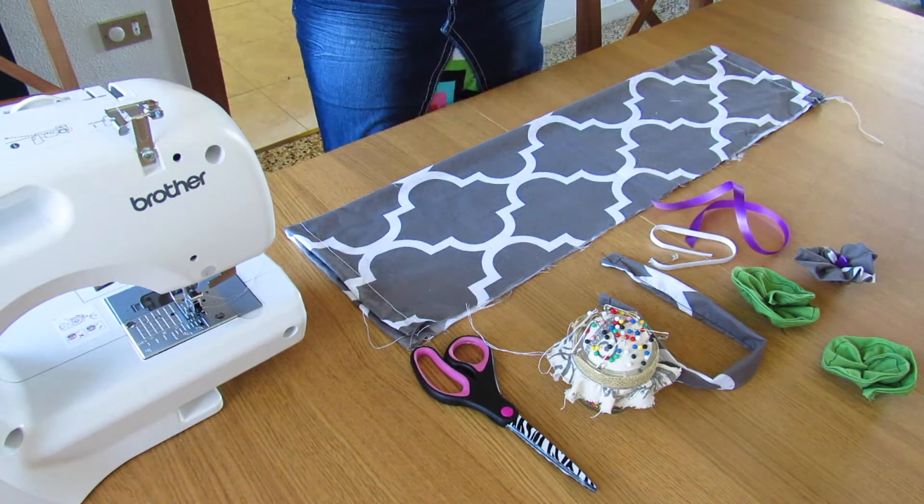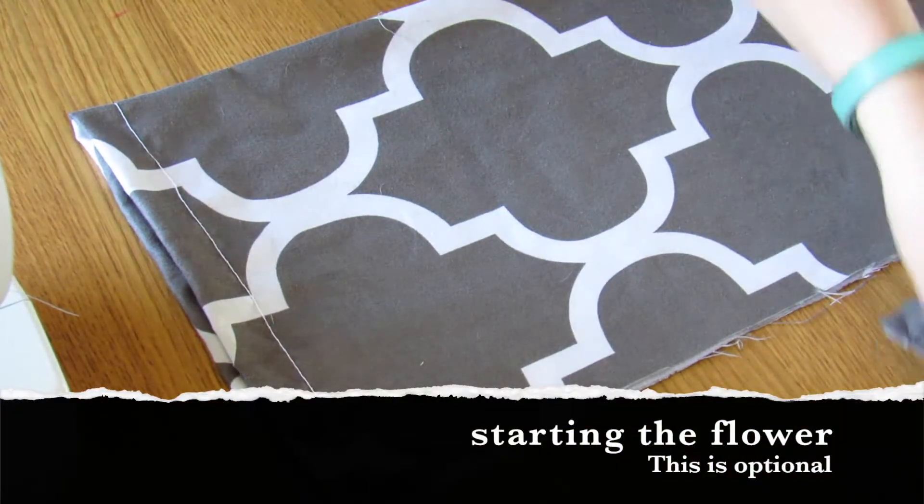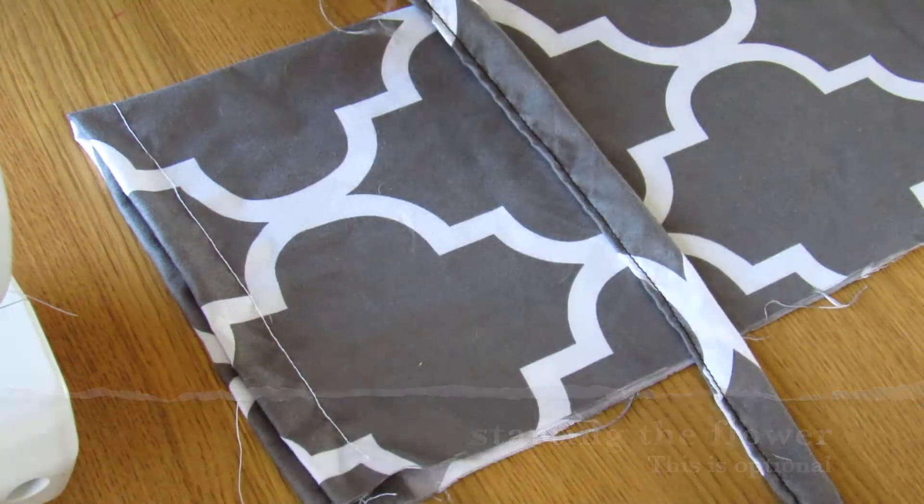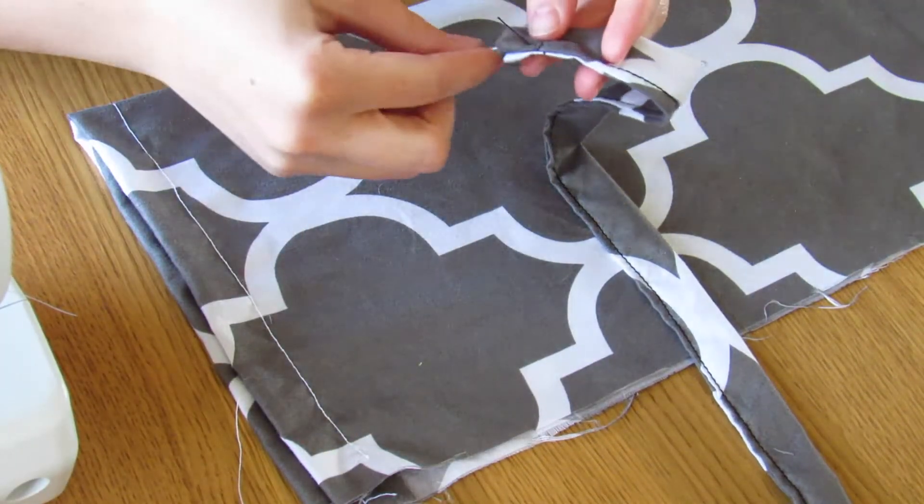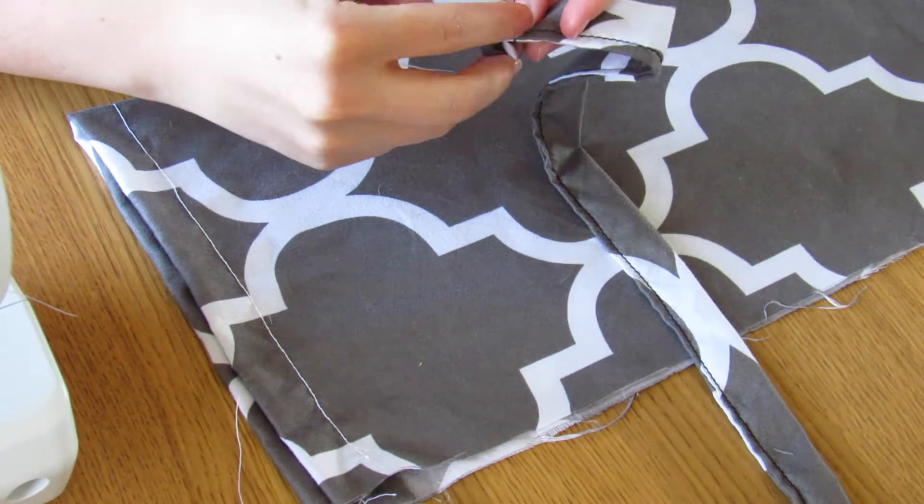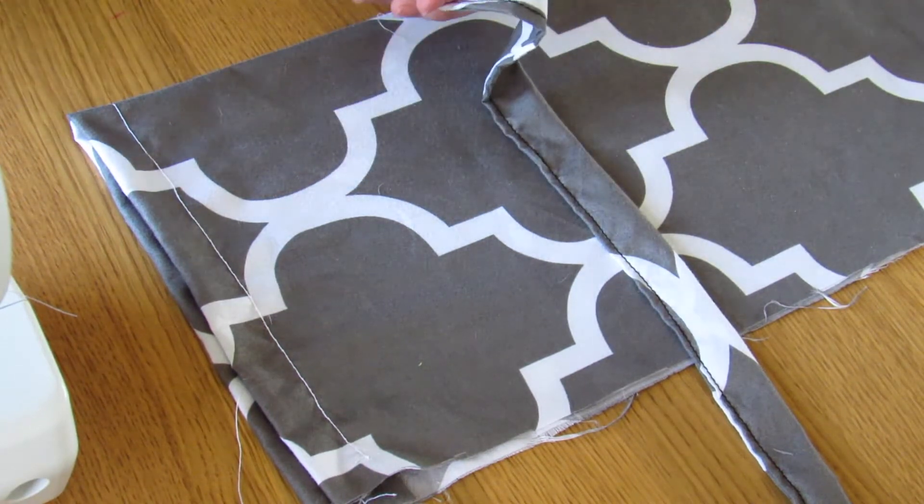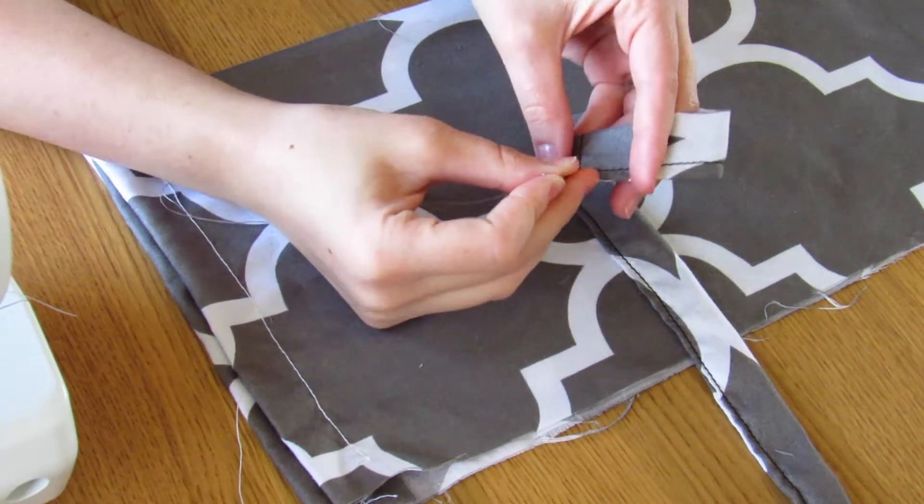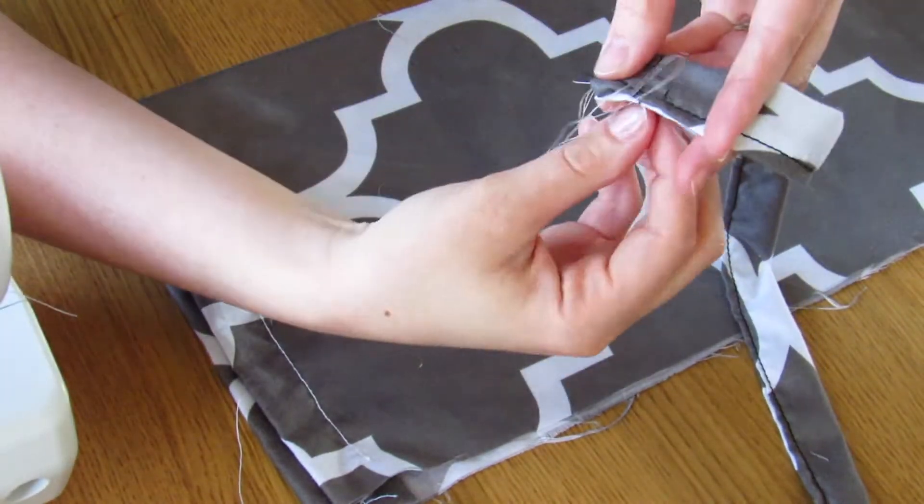You're gonna need your needle and thread and you're gonna make about half an inch stitches near the bottom. While you're doing it, after you make a few, just pull the thread as tight as possible so it gathers, and just continue doing that.